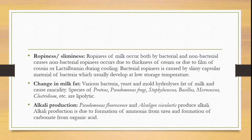Ropiness or sliminess — ropiness of milk occurs due to both bacterial and non-bacterial causes. Non-bacterial ropiness occurs due to the thickening of cream or due to phlegm of casein and lactoalbumin during cooling. Bacterial ropiness is caused by the slimy capsular material of bacteria, which usually develops at low storage temperatures. Change in milk fat — various bacteria, yeast, and molds hydrolyze the fat of milk and cause rancidity.